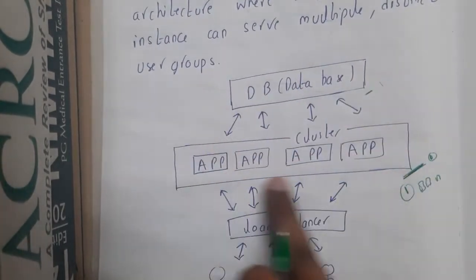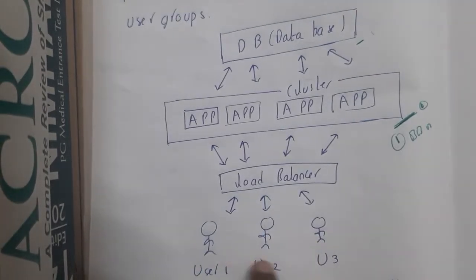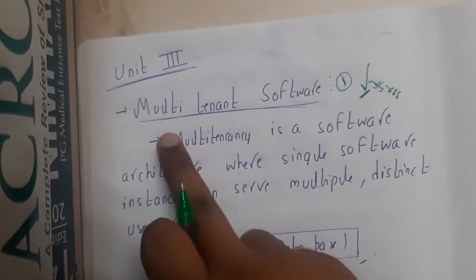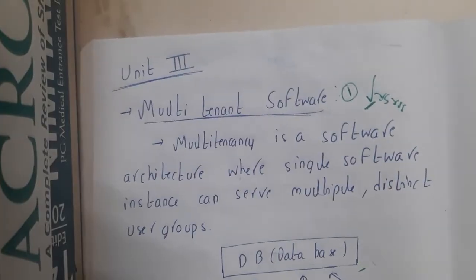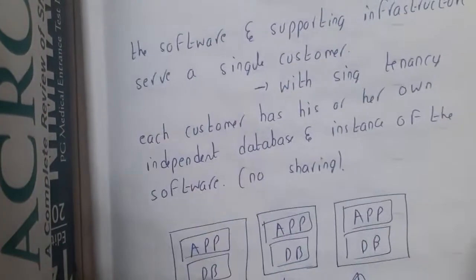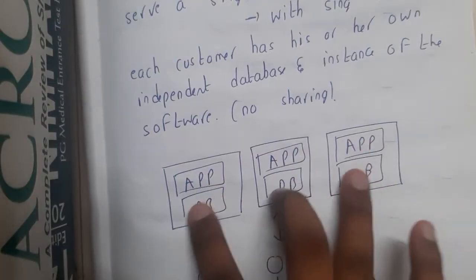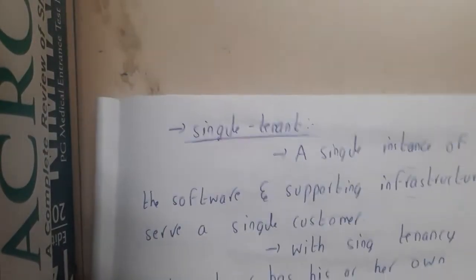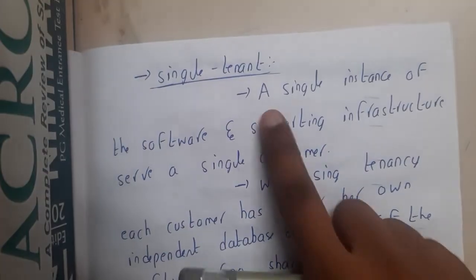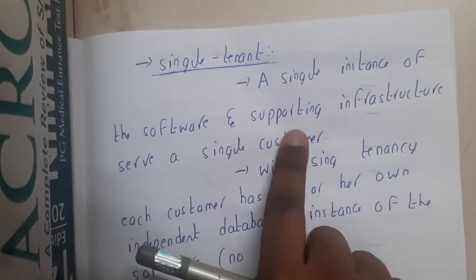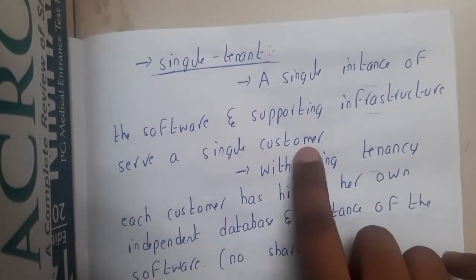A single tenant software is each and every user will have his own application and his own database. So this concept is nothing but single tenant application. A single instance of software and supporting infrastructure serves a single customer, one-to-one indirectly.